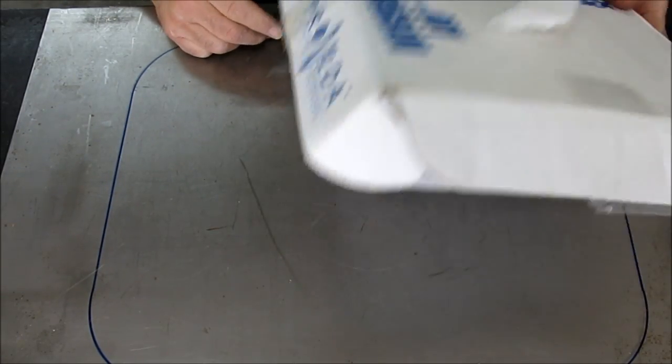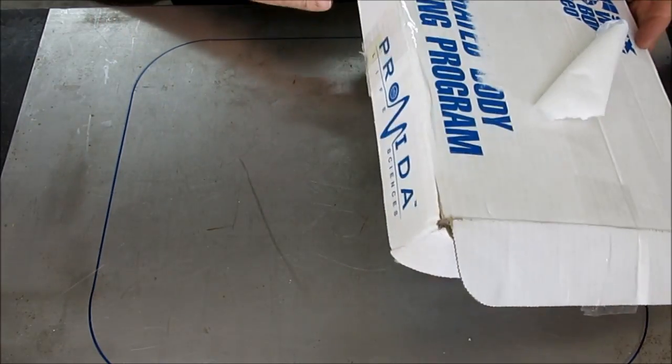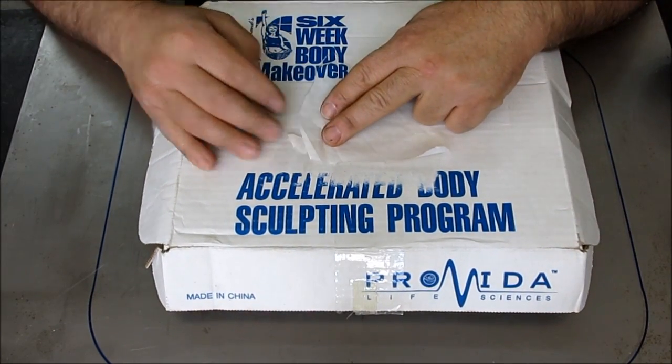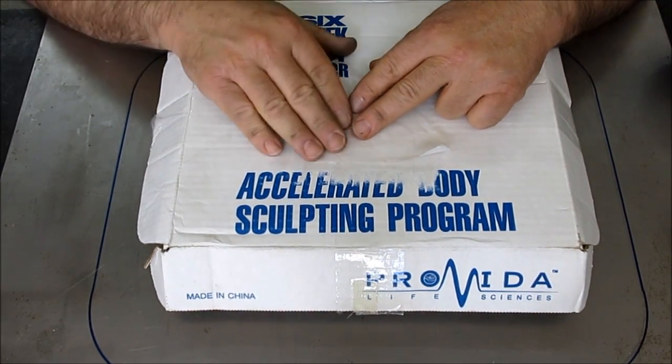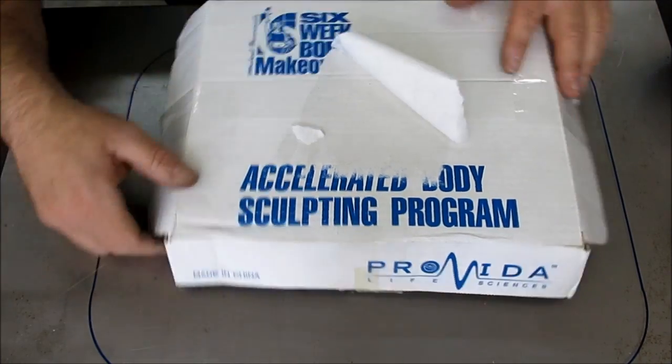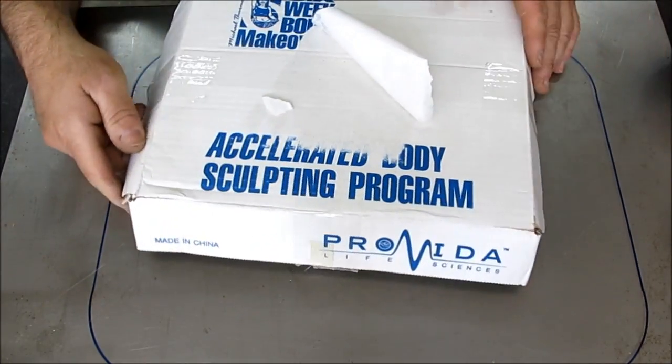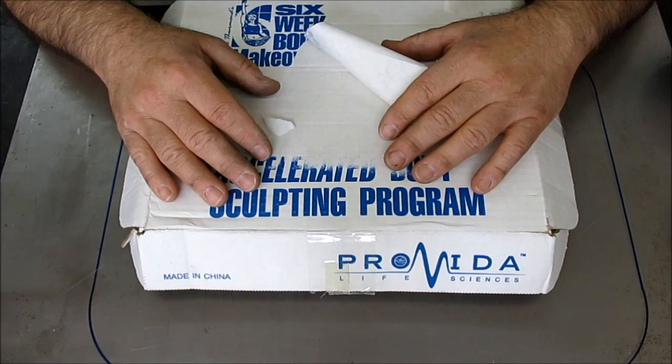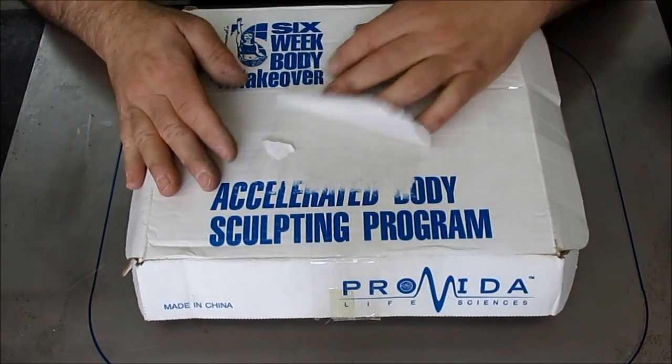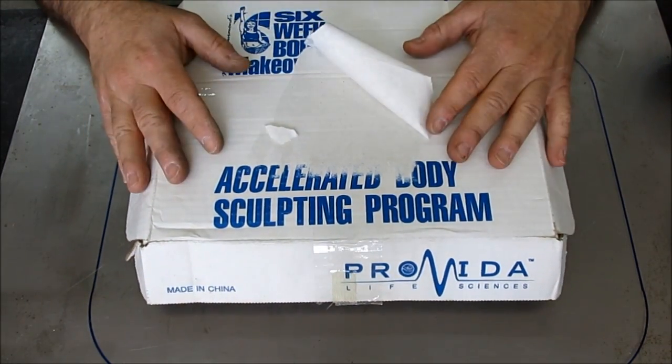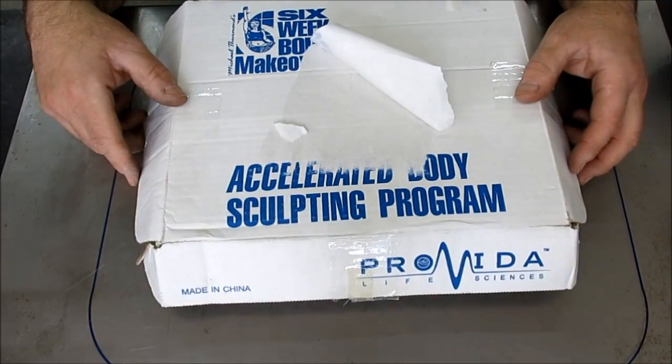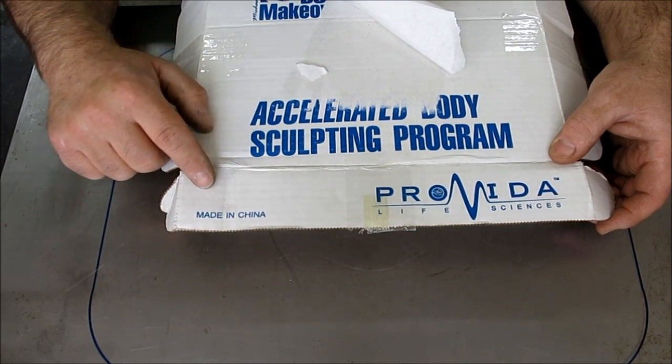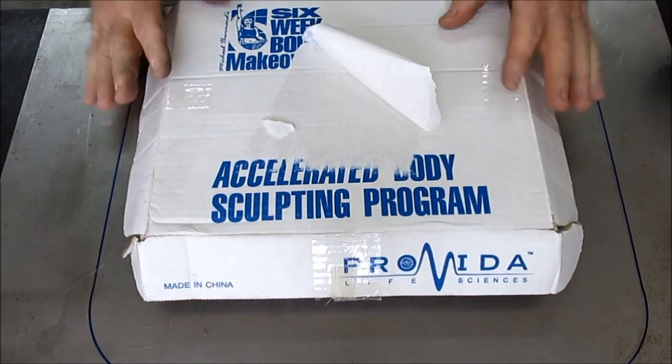So one last thing I thought was kind of funny is the box that Fred sent all that stuff in. I don't know if he's trying to tell me something here. This is the six week body makeover, accelerated body sculpting program. Fred, are you trying to tell me something here, buddy? Anyway, Fred, I'm just joking. And thank you very much for the nice box of exercise equipment. It's made in China, no less. Anyway, thank you very much, Fred.